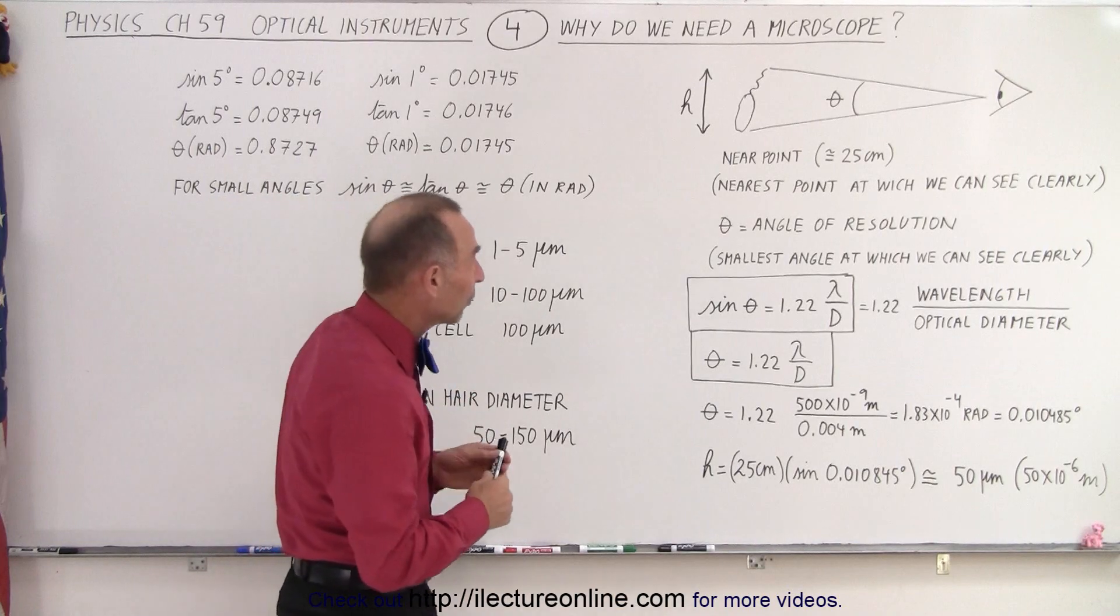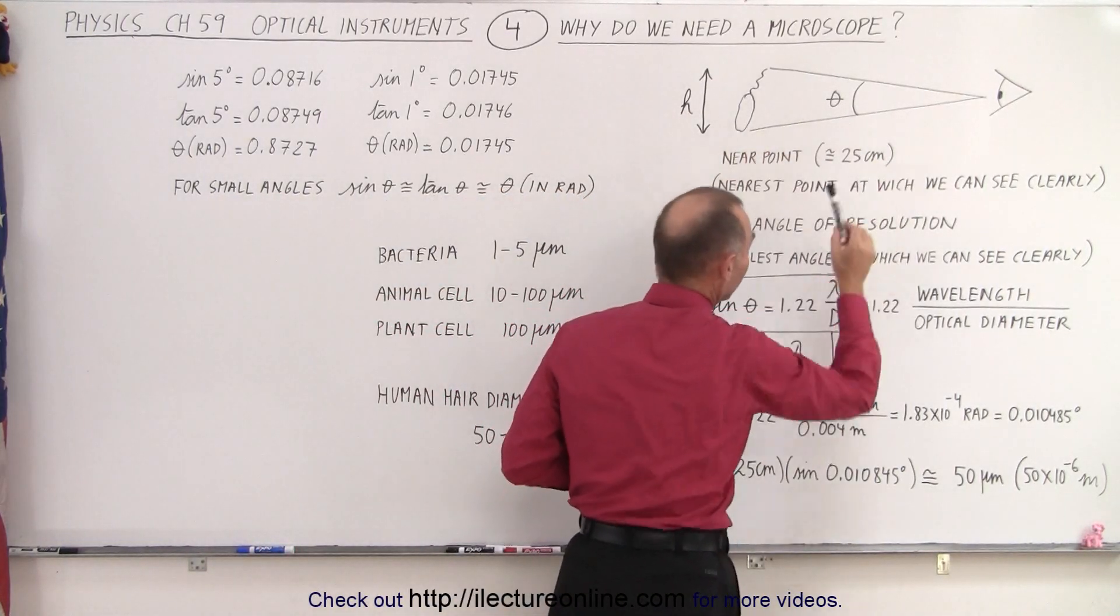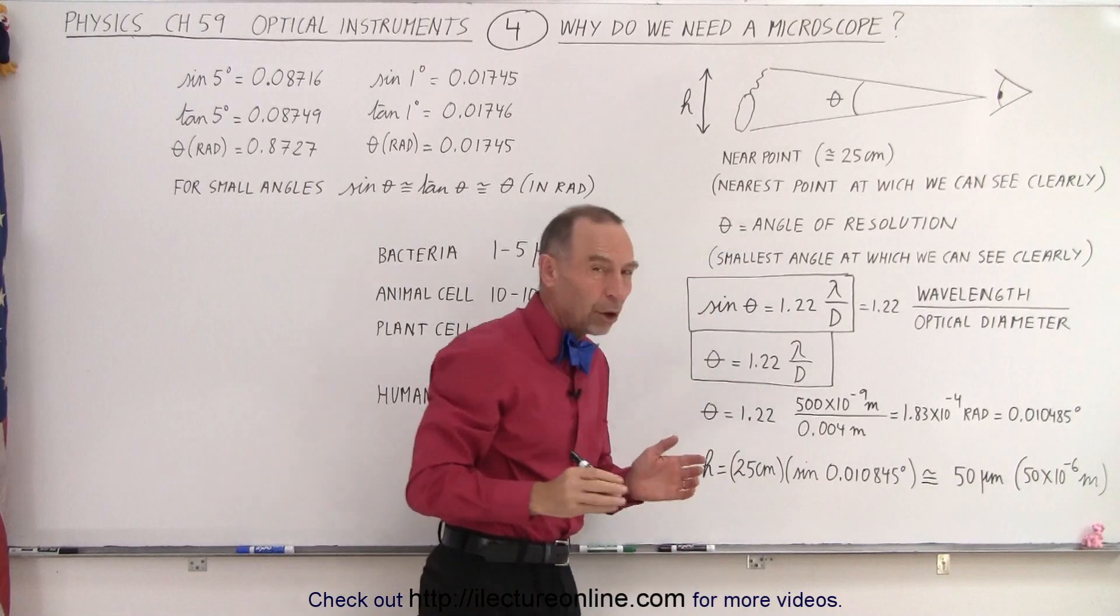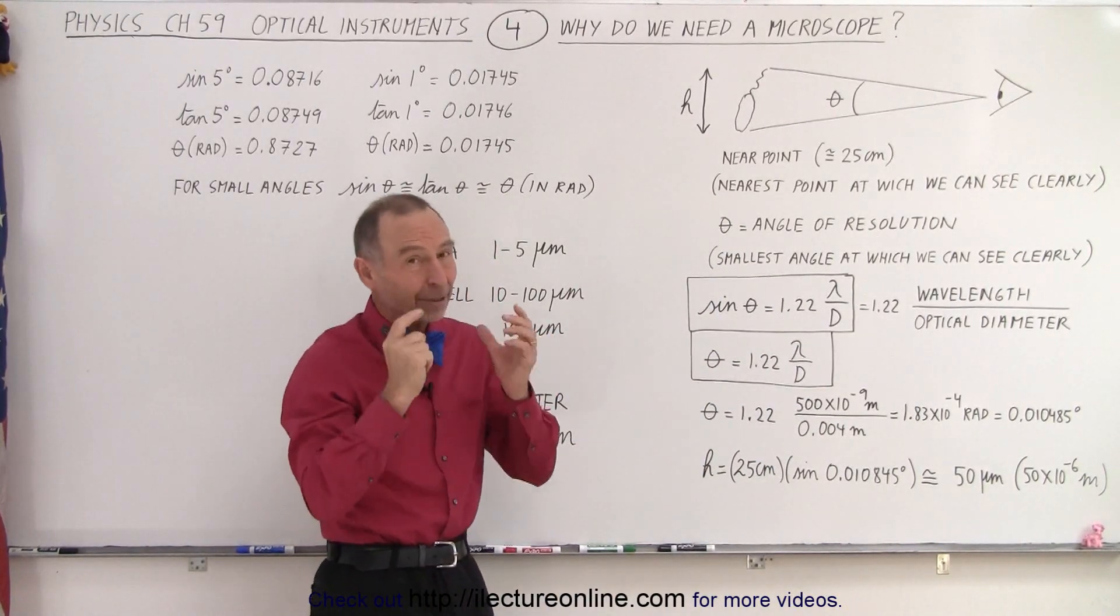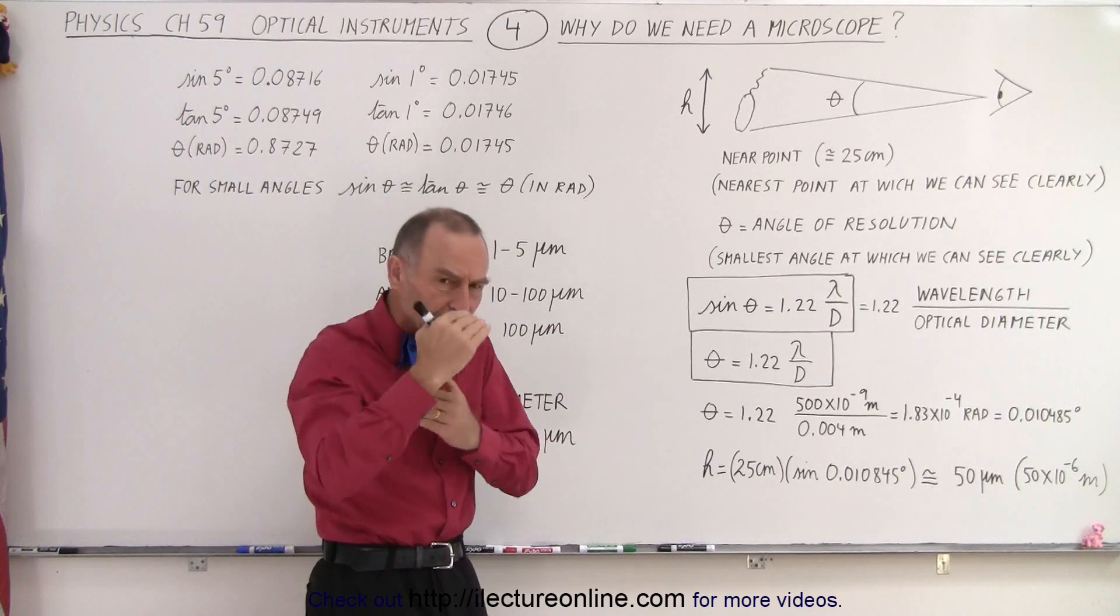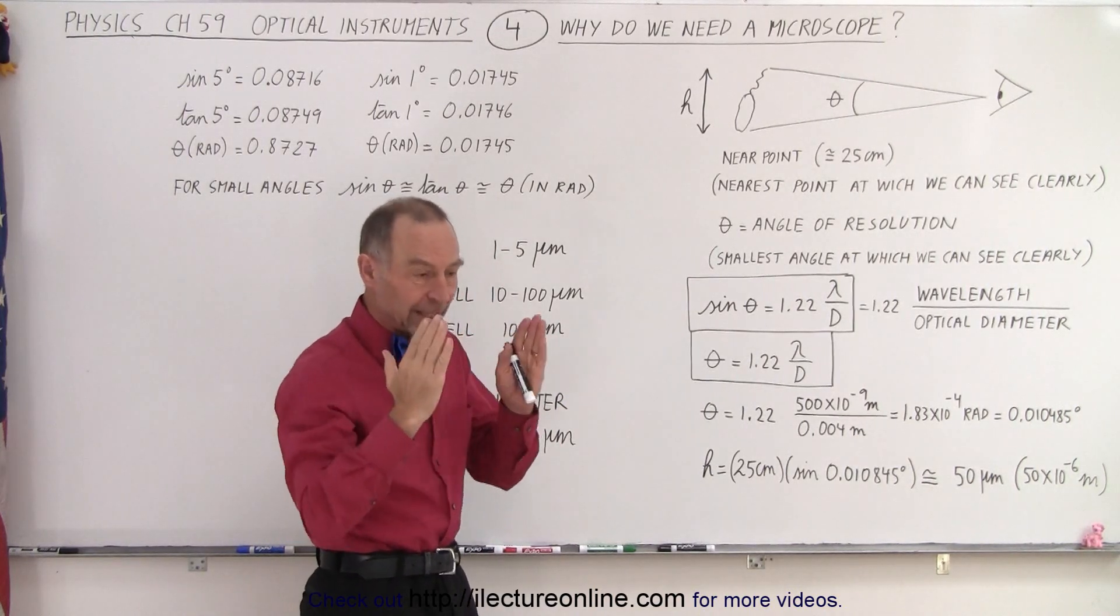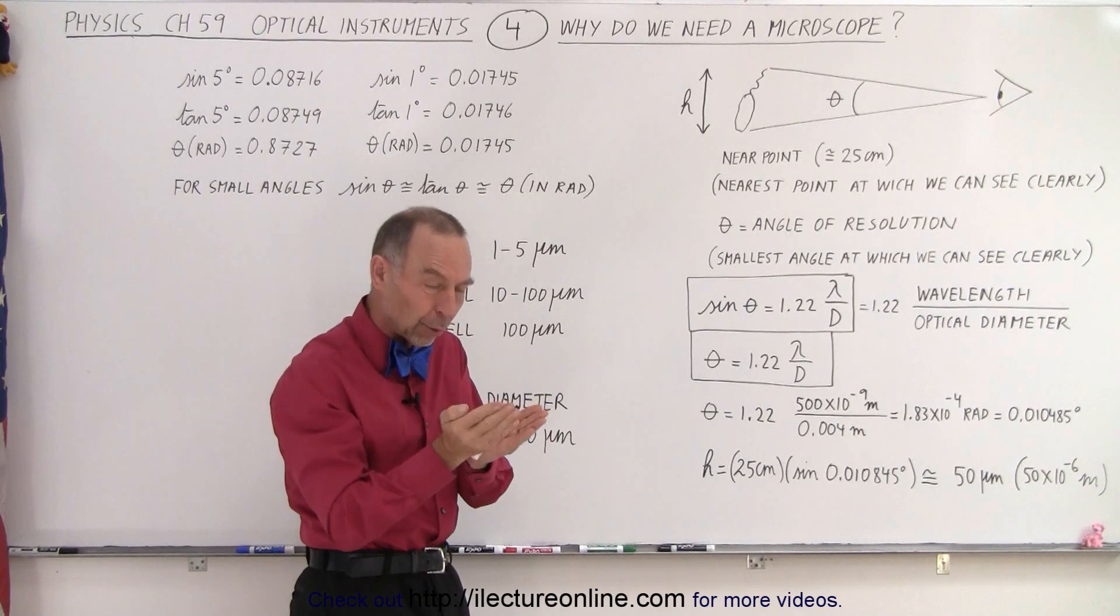So it turns out that we can bring objects relatively close to our eyes. We can bring it down to what we call the near point, which is the nearest point at which we can see things clearly. That depends upon how well we can adjust the lenses in our eye. They are adjustable. They can be narrowed or they can be made more round.